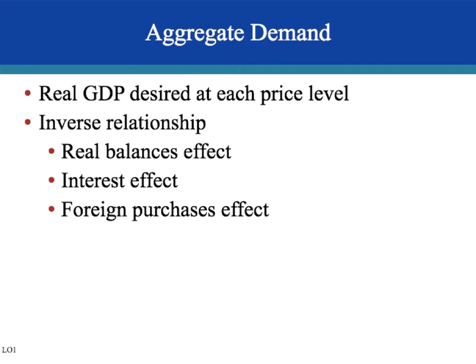This is going to be a little different than what we learned in supply and demand. Before we were doing supply and demand of an apple — price level went up, we demanded a lower quantity of apples; price level went down, we demanded a higher quantity. But now we're looking at the demand for all the goods and services in the economy.